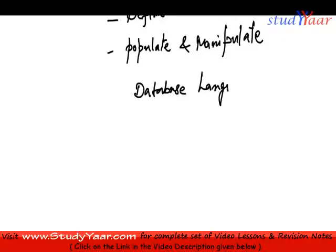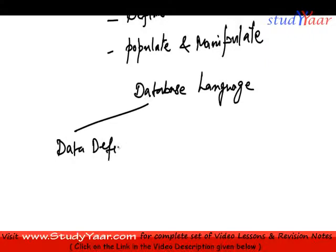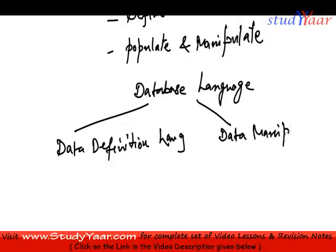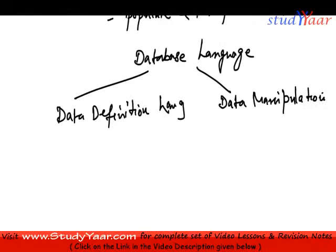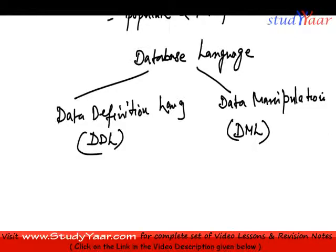On the basis of this, the database language is broadly categorized into two sets of languages. We have something called Data Definition Language (DDL) and we have something called Data Manipulation Language (DML). I'll refer to them as DDL and DML going forward.